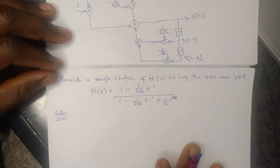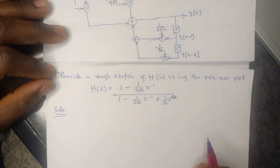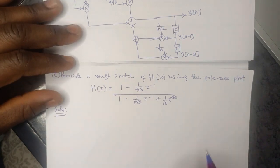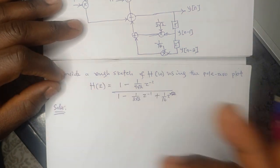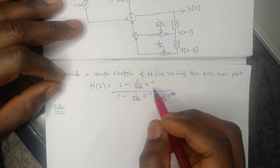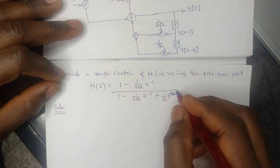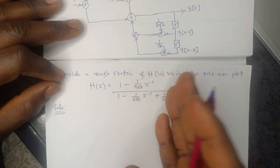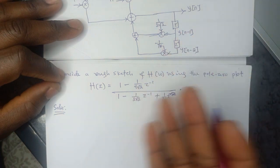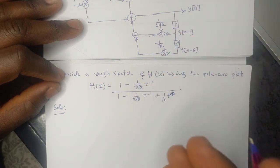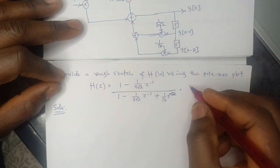The C part of this question asks us to provide a rough sketch of H(ω) using the pole-zero plots. So we need to get the pole-zero plots first, and for that we start from H(z). We can see that the powers of Z are negative (−1 and −2), so we need to convert it to a form where the powers of Z are positive. To do that, we multiply by the highest power, which is Z².